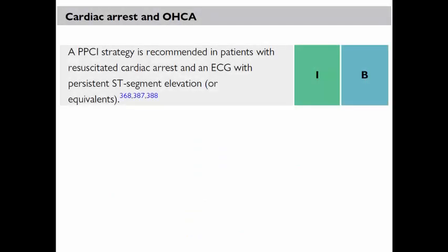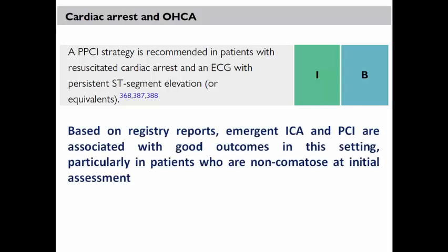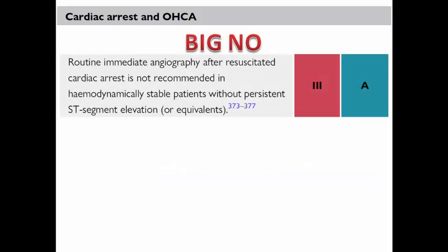The recommendation for cardiac arrest is that primary PCI is recommended in patients with resuscitated cardiac arrest and an ECG with persistent ST elevation or its equivalent. Based on registry reports, emergent coronary angiography and PCI in this case are associated with good outcomes, particularly in those who are non-comatose at initial assessment, especially those who received early and high-quality CPR preserving cerebral perfusion.